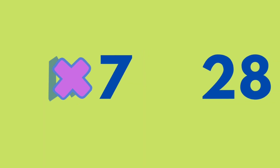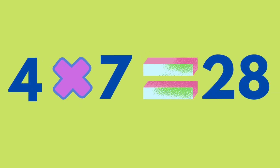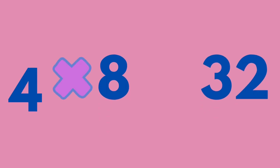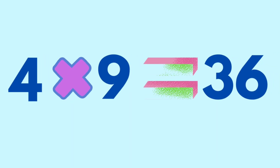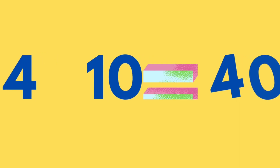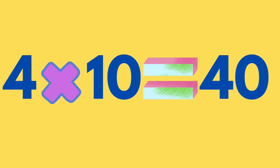4 times 7 is equal to 28. 4 times 8 is equal to 32. 4 times 9 is equal to 36. 4 times 10 is equal to 40. Let's see the summary.